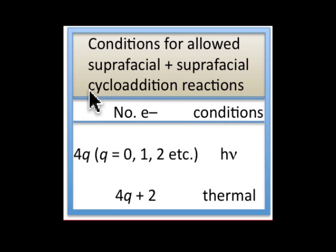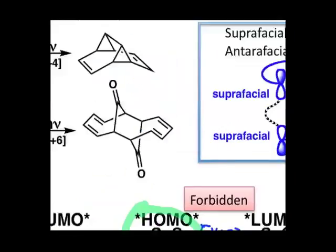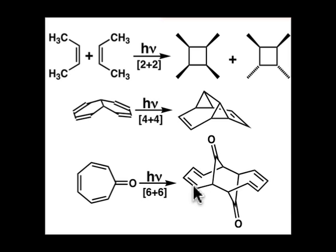Let's summarize and focus only on the suprafacial plus suprafacial rules, specifically looking at the conditions for allowedness. In the three reactions that you see here, these are all photochemically allowed and they all involve a certain number of pi electrons.